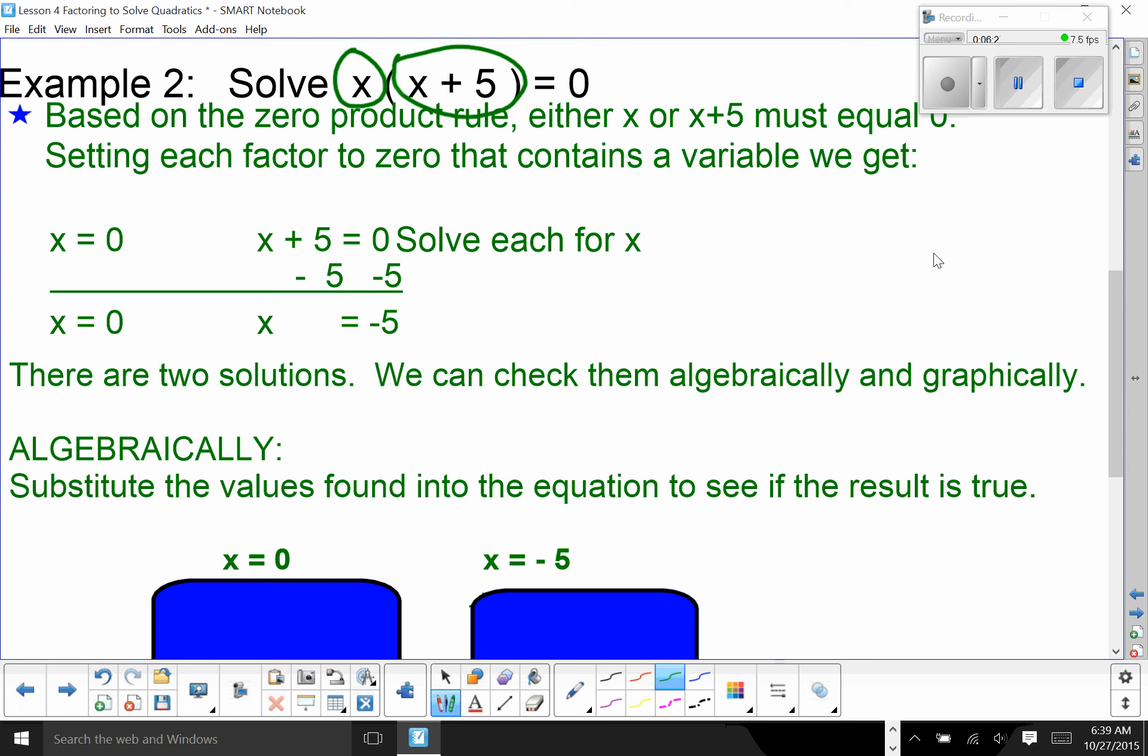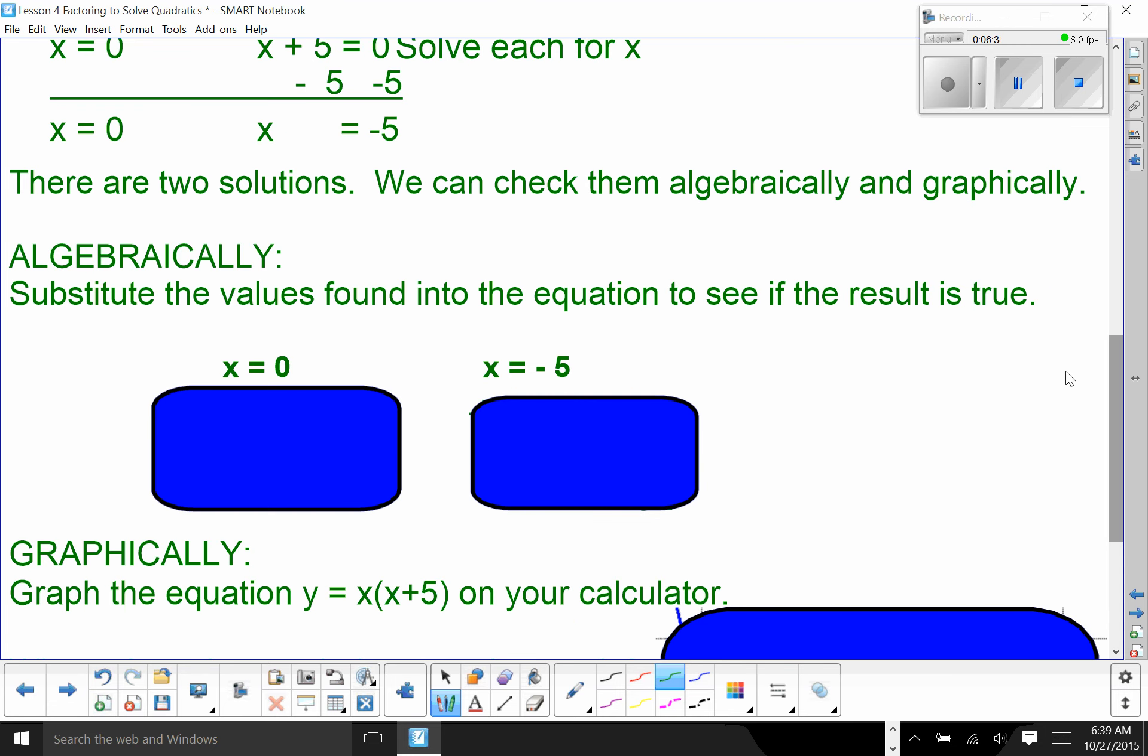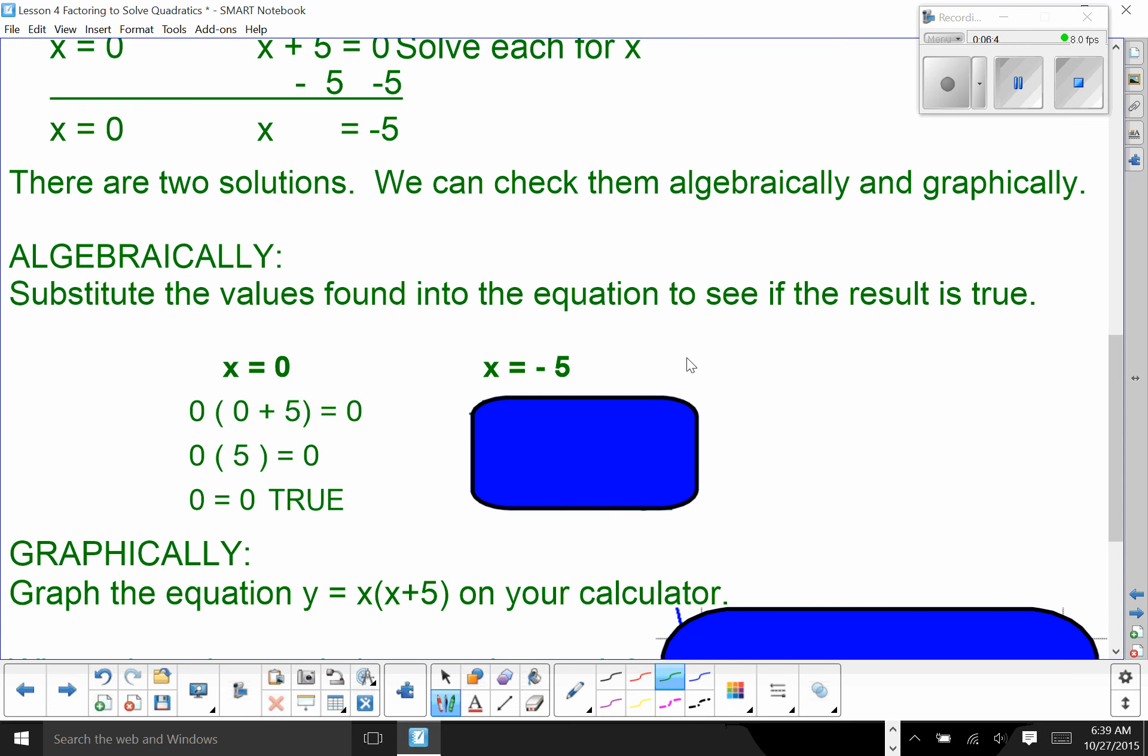Well, the X equals zero is pretty easy. X plus 5 equals zero. Not much harder. X is equal to negative 5. Here, I have two solutions. I can check them both algebraically and graphically. Algebraically, I substitute the zero back in. Zero times zero plus 5 equals zero. Zero times 5 is zero. That's true. The other one, negative 5 times the quantity negative 5 plus 5 equals zero. The negative 5, it's inside the parentheses, so I have to evaluate that first. According to the order of operations, negative 5 plus 5 is zero. Zero times negative 5 is zero. Again, true. They both work.